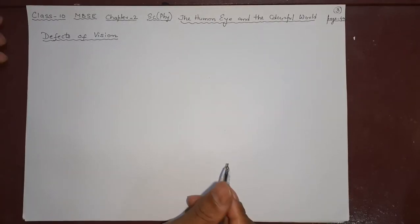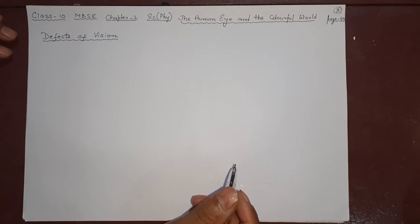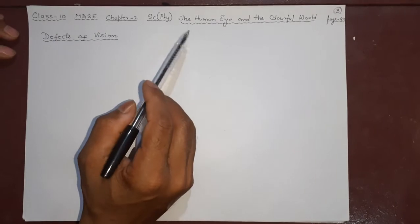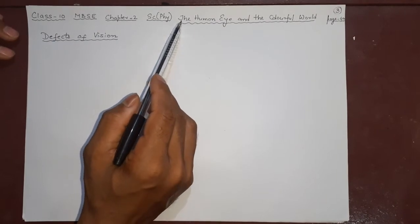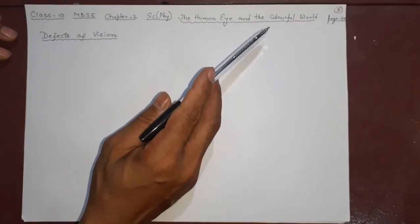Welcome viewers to the SD Online Classes. This is Class 10 MBAC, Mizoram Board of School Education, Chapter 2 of Science Physics. The name of the chapter is The Human Eye and the Colorful World.